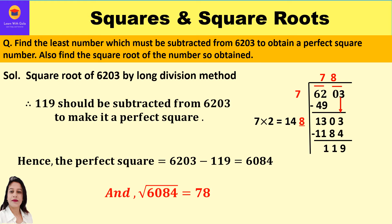Let us take the first question: find the least number which must be subtracted from 6203 to obtain a perfect square number, and also find the square root of the number so obtained. Now, 6203 is a non-perfect square number. If we subtract a least number from it, we shall obtain a perfect square number. We also have to find the square root of the number so obtained.